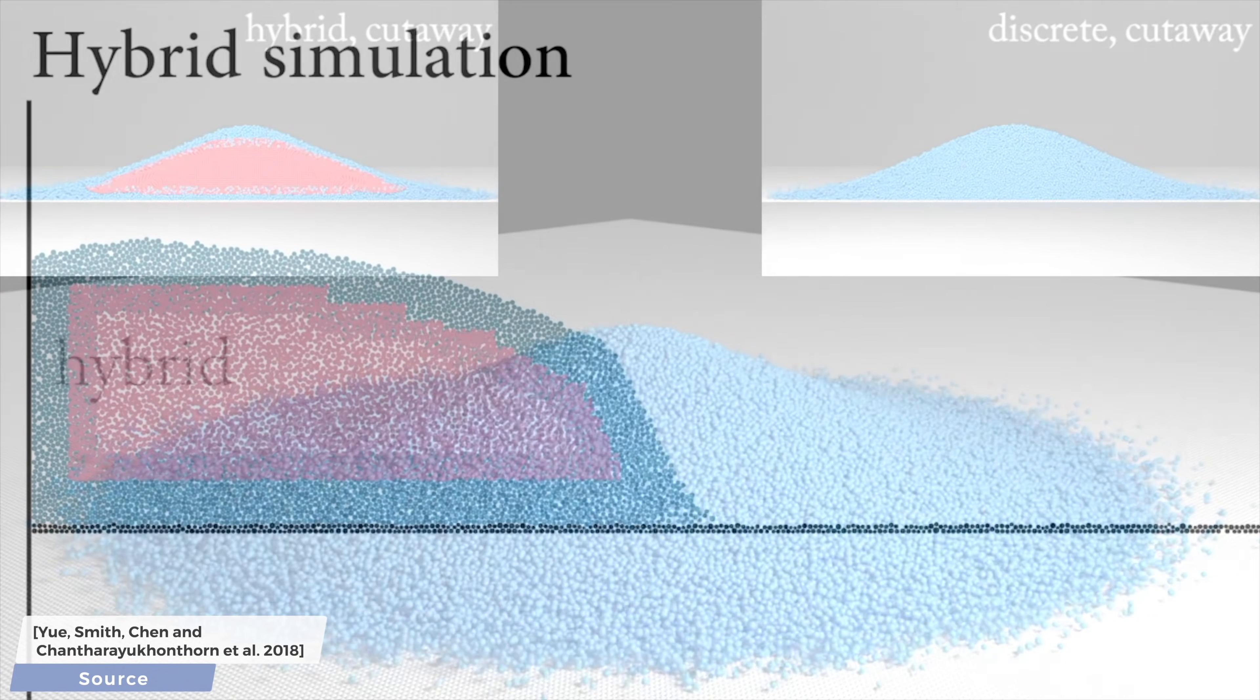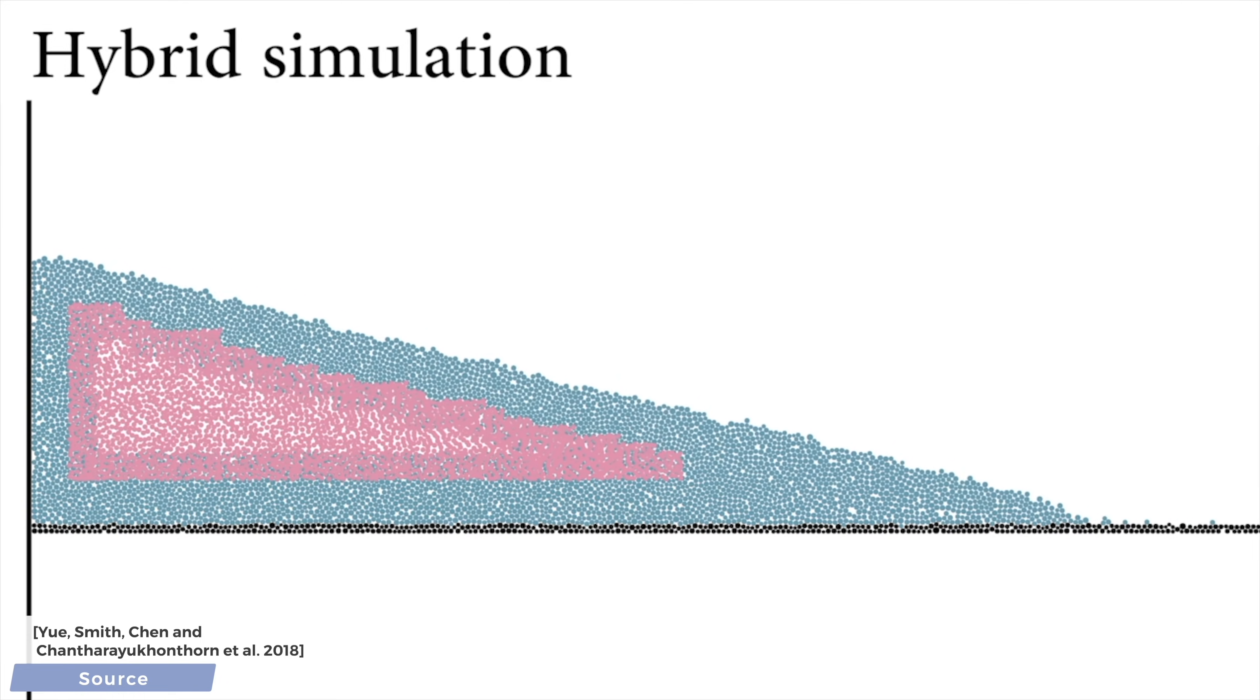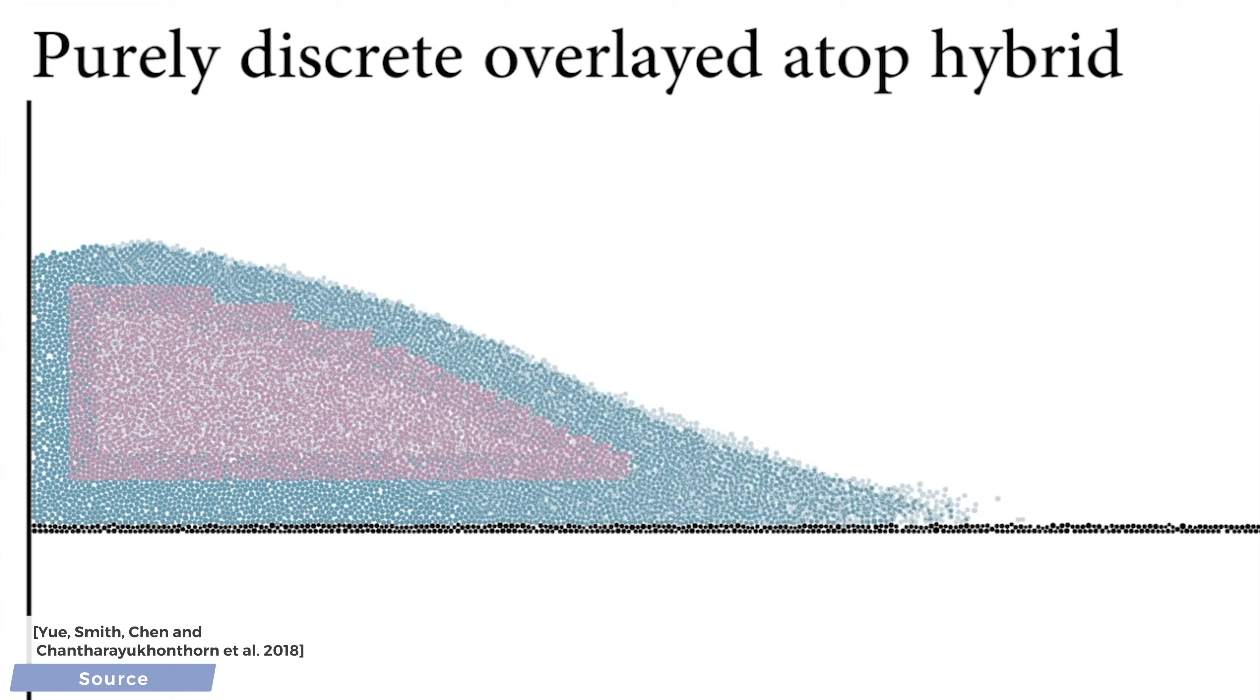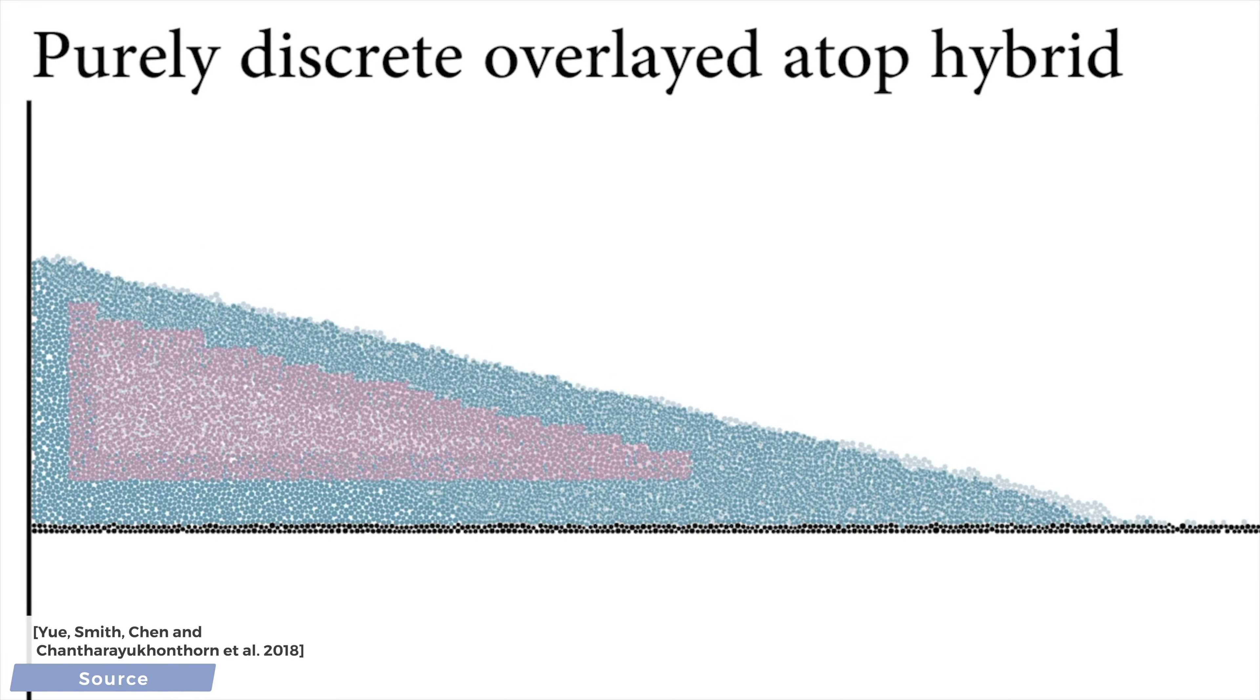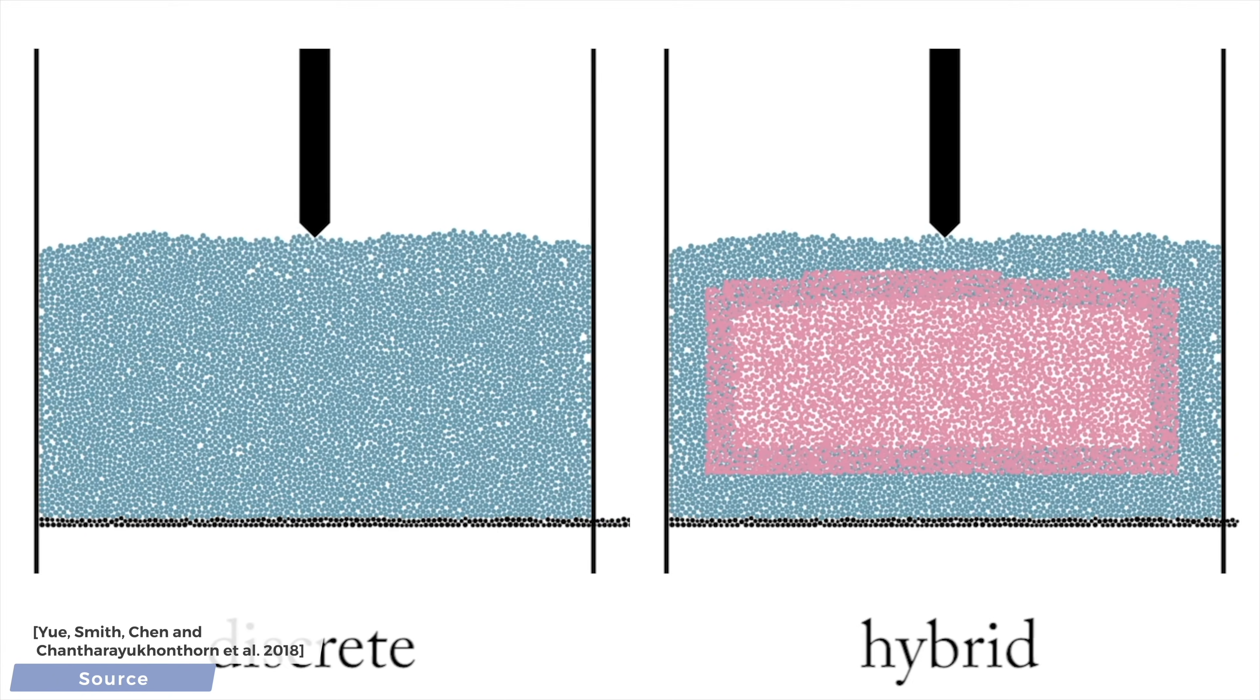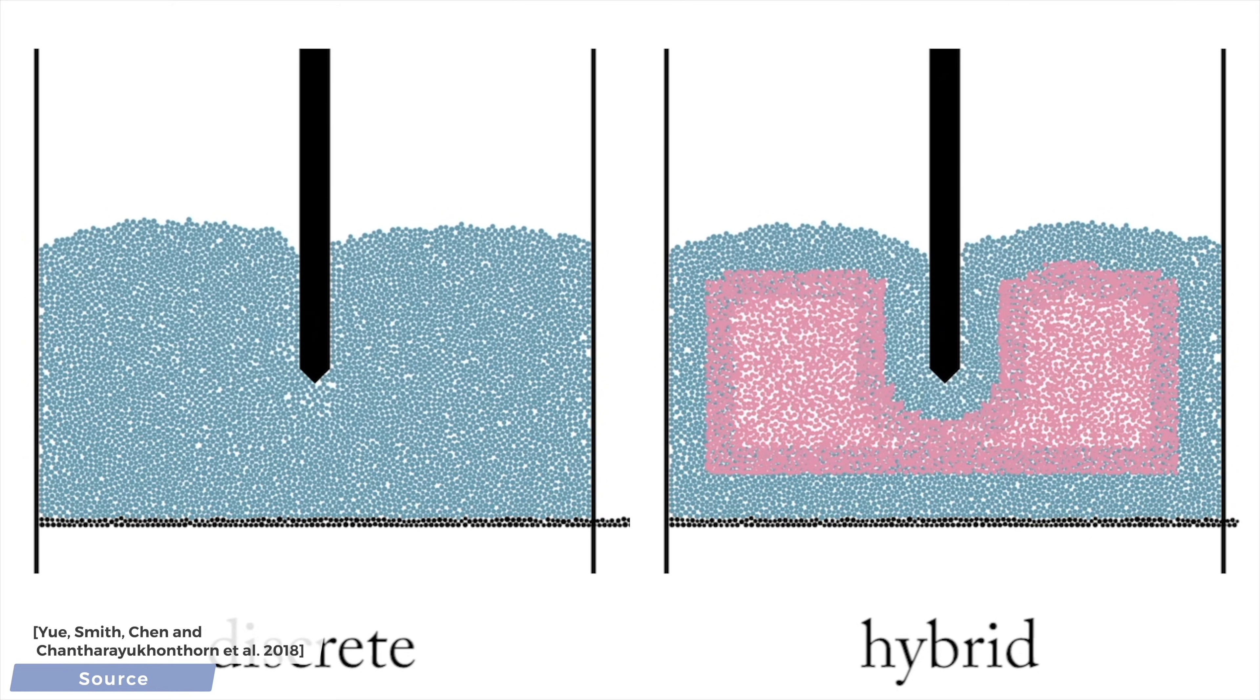So, in short, a discrete method gives us a proper simulation but takes forever, while the continuum methods are approximate in nature but execute quicker. And now, from this exposition, the question naturally arises, can we produce a hybrid method that fuses together the advantages of both of these methods?